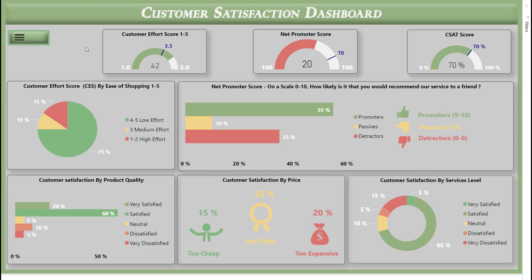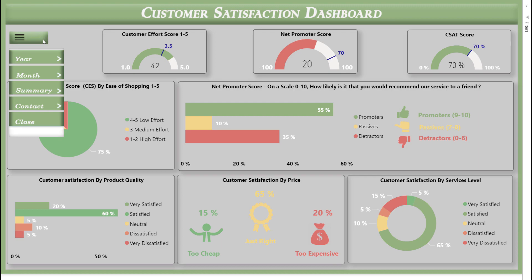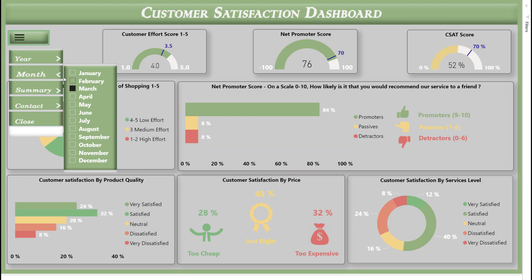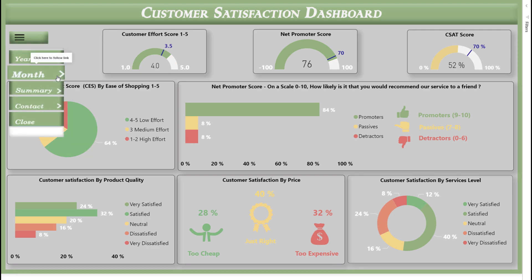In this video we're going to look at how a button can improve interactivity and the overall experience of our report and dashboard. Here we have a menu button — if you hover the mouse over it, it will display a menu text with animation. Just click on the menu button and it will display the navigation menu: Year, Month, Summary, Contract, Close.